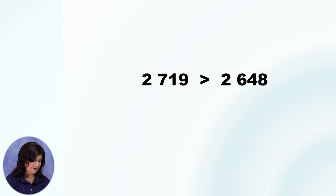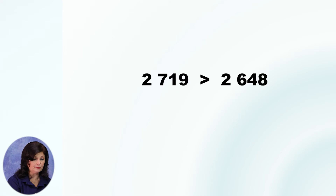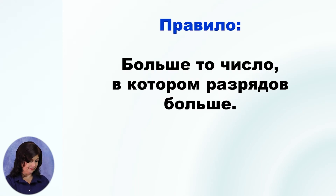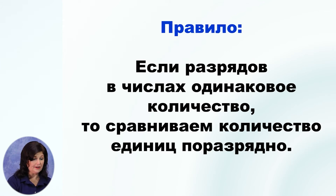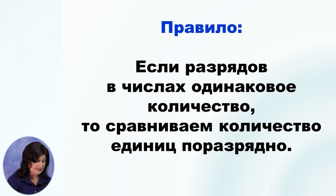Правило. Проверяем количество разрядов в обоих числах — больше то число, в котором разрядов больше. Если разрядов в числах одинаковое количество, то сравниваем количество единиц по разрядам. Процесс сравнения начинается со старшего разряда и продолжается до нахождения неравных значений разрядов.